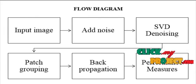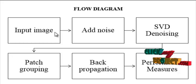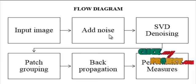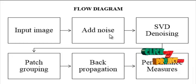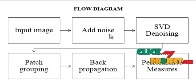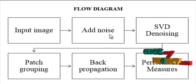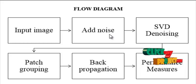Let us see the flow of the process. The input image is obtained from the dataset. First, we add additive white Gaussian noise to the input images. Additive white Gaussian noise is added uniformly to all the pixels of the input images, and a Gaussian distribution function is employed for the generation of the unwanted pixel information.